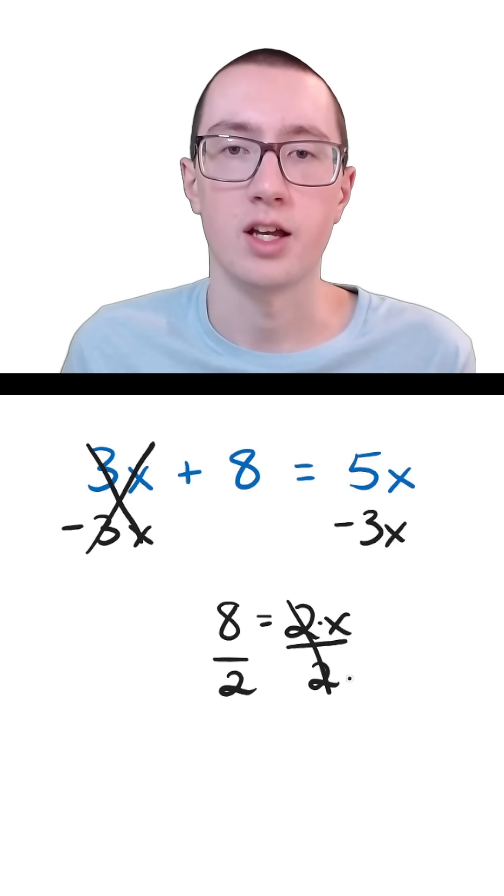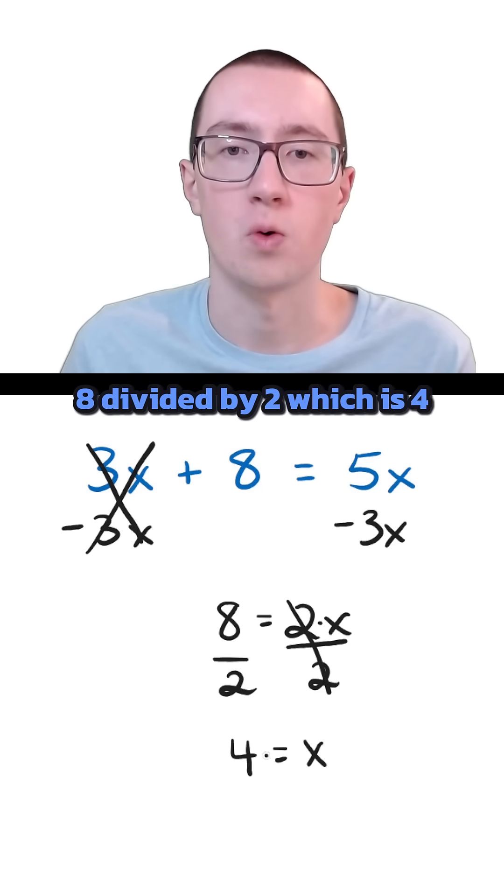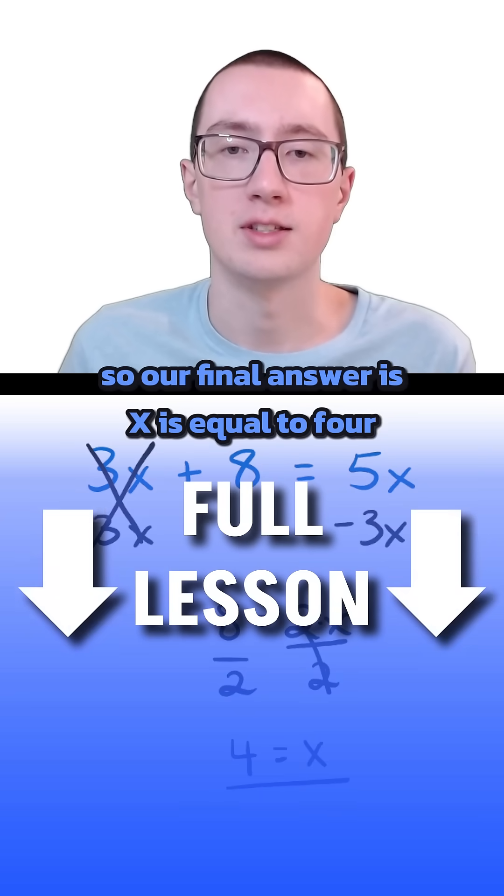These cancel out, and on this side we're just left with x equals 8 divided by 2, which is 4. So our final answer is x is equal to 4.